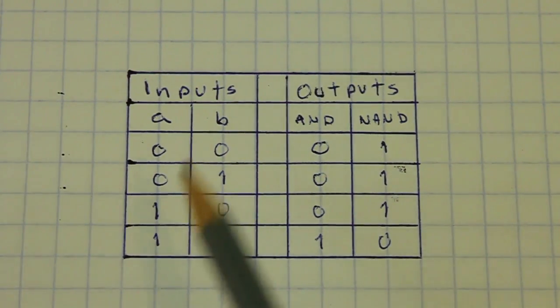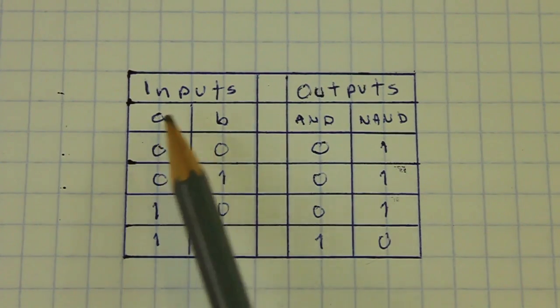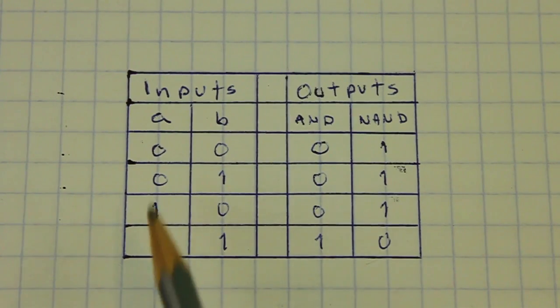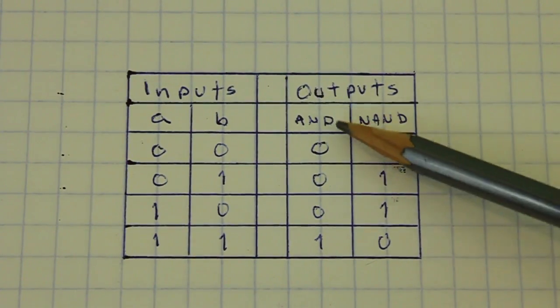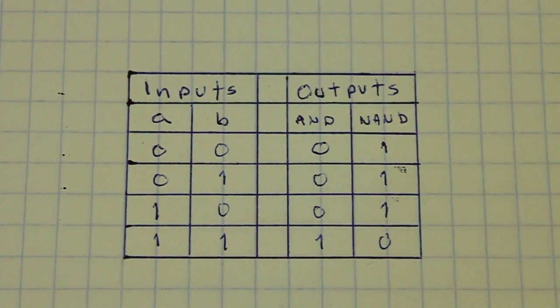So here we have the truth table. We have the two inputs A and B, which can be in any of the four combinations 00, 01, 10 and 11. And here we have the output of the AND gate and its negative, the NAND gate.